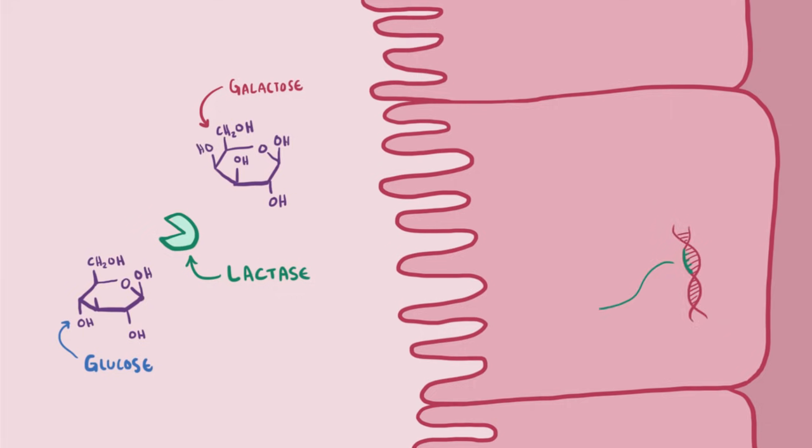The gene responsible for the production of the lactase enzyme is expressed exclusively in the enterocytes lining the small intestine, which are cells that help absorb nutrients from the stuff we eat. Once produced, that enzyme makes its way to the cell surface, along the cell's microvilli, these little tentacles that help increase surface area and absorb nutrients.